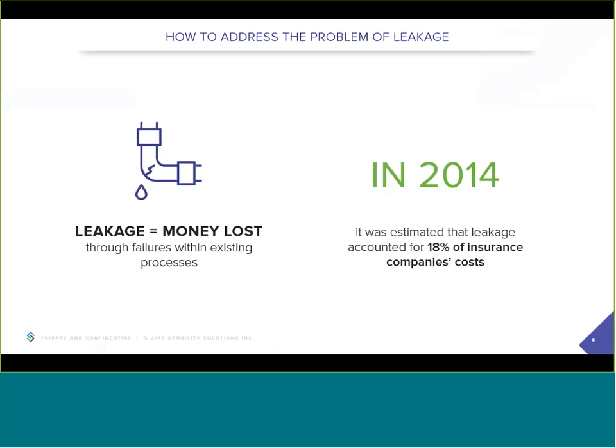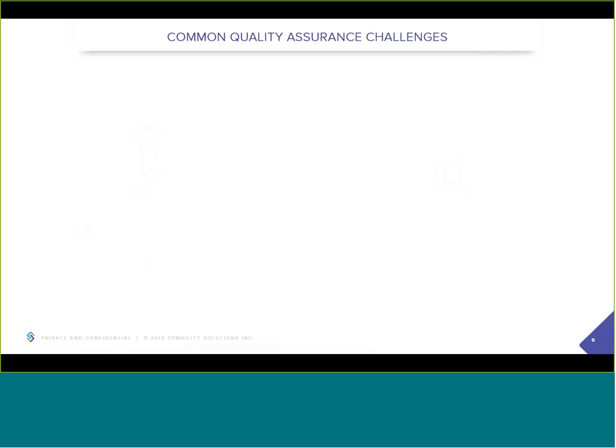In 2014, leakage accounted for 18% of insurance companies' costs — not a small number. Because leakage is a challenge for every insurance company, most want to control the claims process as closely as they can. Typically, a carrier accomplishes this by making sure their claims staff are correctly assessing damage, accurately documenting it, and generating an accurate repair estimate. This challenge is often addressed through training on adjusting and estimating best practices, as well as how to effectively use the estimating tools. But the reality is there's still some leakage, and the measurement of this can only be assessed through effective quality assurance programs.